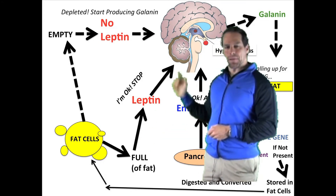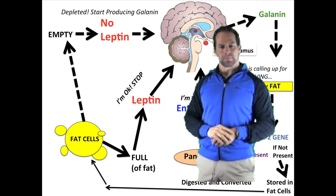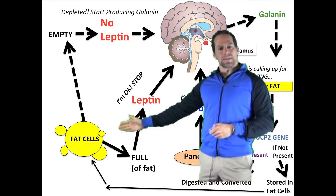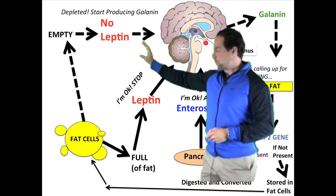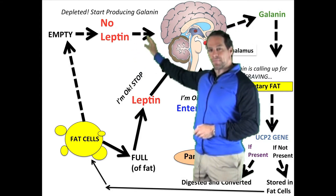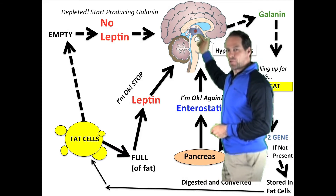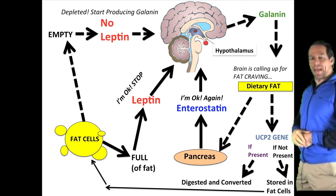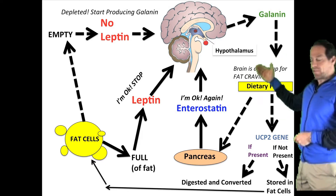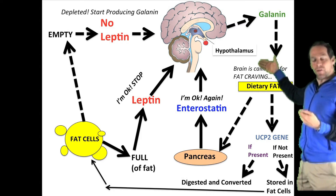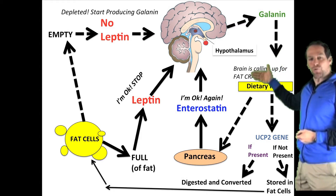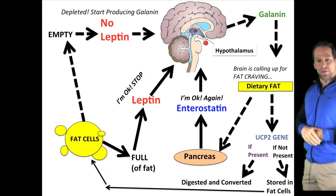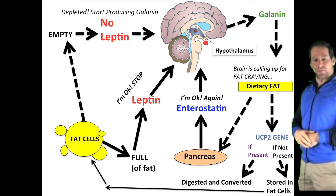Leptin and galanin play a big role in the satiety process of the feeding cycle. If the fat cell is empty and there's no fat, there is no leptin. Therefore, the hypothalamus is signaled to release galanin. Once galanin is released, cravings to eat fatty food increase. The person will then consume fatty foods, and the fat will travel through the digestive system where it will either be digested or converted into energy, or stored in the fat cells of the body.